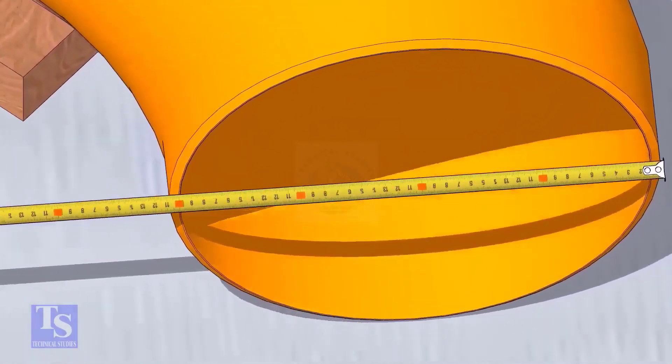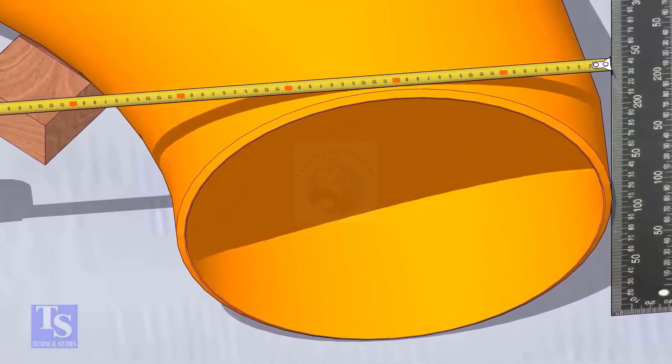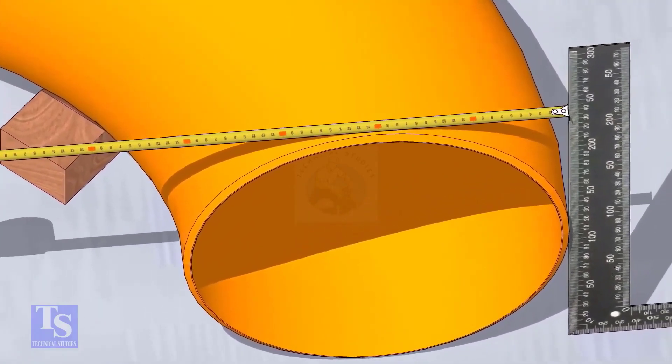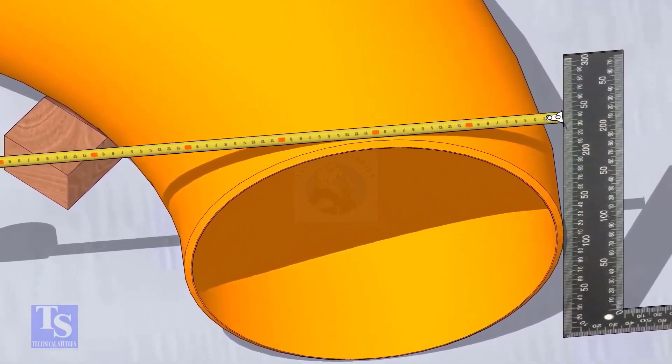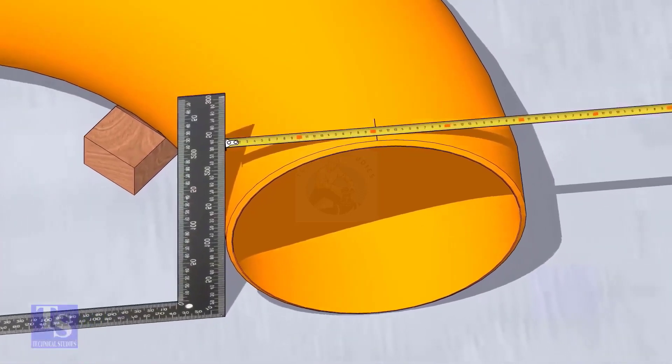Put a right angle at the side of the elbow, touching the side smoothly, and mark 203 millimeters on the top side of the elbow. Put the right angle on the opposite side and check if the marking is correct.